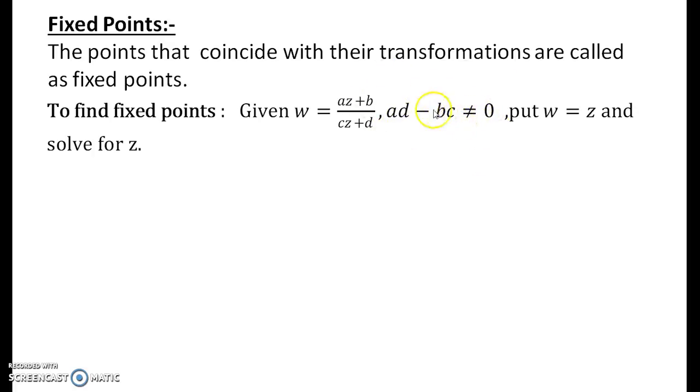This is the condition that is required for a bilinear transformation. Then what you do is to find the fixed points of this bilinear transformation you put w = z and then you obtain a quadratic equation and you solve it further.